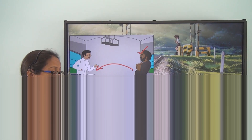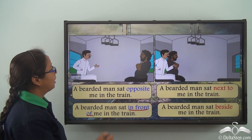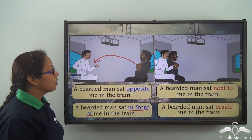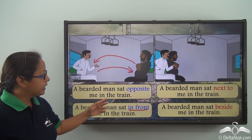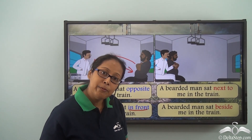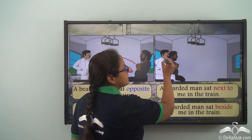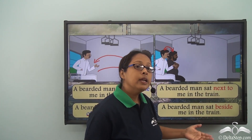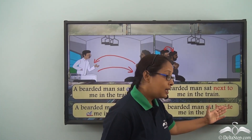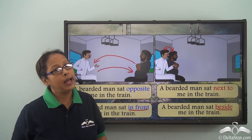This bearded man is sitting opposite me, or if I say he's sitting in front of me, it comes to the same thing. We can say the same thing in a different way and it would mean the same. In the second picture we can see that this bearded man is sitting side by side, or right beside me. We can say the bearded man sat next to me in the train, and we can also say a bearded man sat beside me in the train. Both have the same meaning.